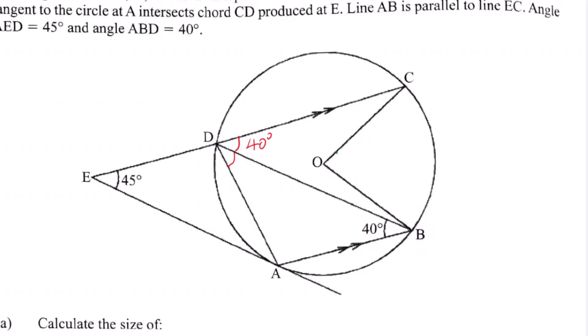There is another angle we can find: angle EAD. By the alternate segment theorem, since EA is a tangent, angle EAD is in the alternate segment with angle DBA, which is 40 degrees. Therefore angle EAD is also 40 degrees.